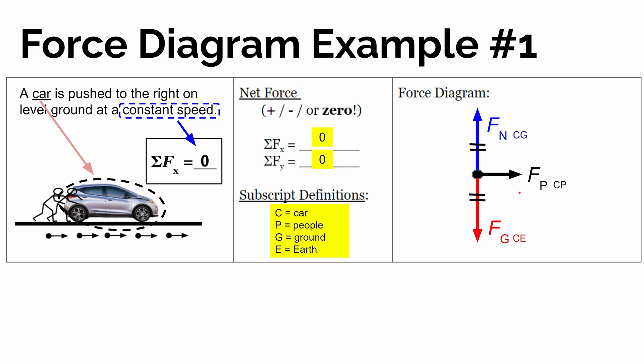So at this point, the force diagram is not quite done yet. Because if we go back to the sum of the forces in the x direction, we know the sum must be zero — because it's not speeding up or slowing down, it's moving at a constant speed.